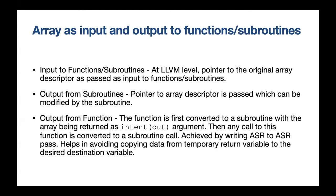For output from functions, there are two ways to deal with this. One is to create a temporary variable, store the output of the function there, and then copy to the desired destination. The other way is to convert the function into a subroutine and pass the pointer directly, avoiding the copy. We achieved this by writing an ASR to ASR pass that converts all functions to subroutines and then converting all function calls to subroutine calls.